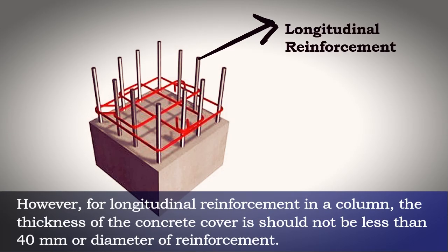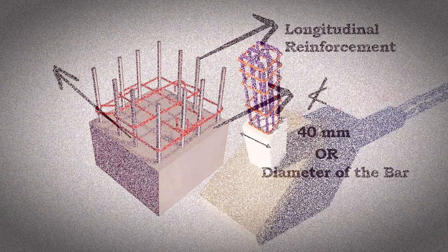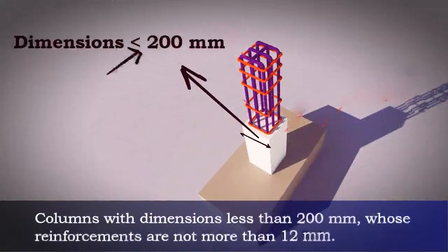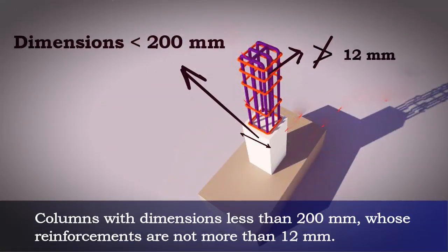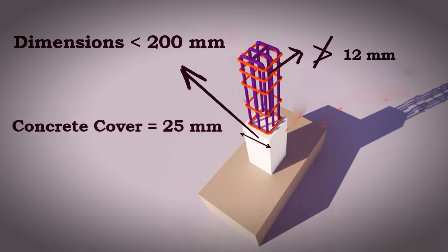For longitudinal reinforcement in a column, the thickness of concrete cover should not be less than 40 mm or the diameter of reinforcement. However, for columns with dimensions less than 200 mm whose reinforcement bars are not more than 12 mm, a concrete cover of 25 mm is adopted.